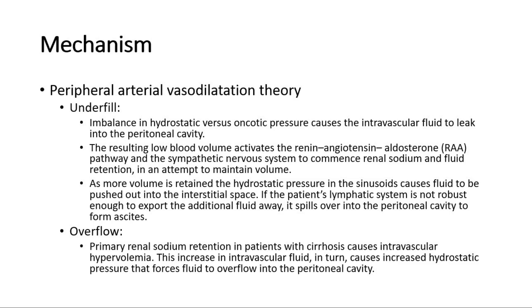As more volume is retained, the hydrostatic pressure in the sinusoids causes fluid to be pushed out into the interstitial space. If the patient's lymphatic system is not robust enough to export the additional fluid away, it spills over into the peritoneal cavity to form ascites.